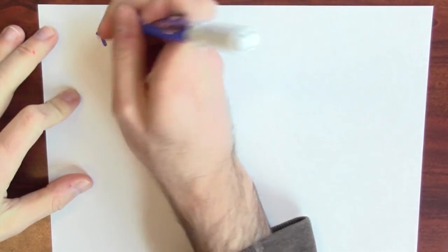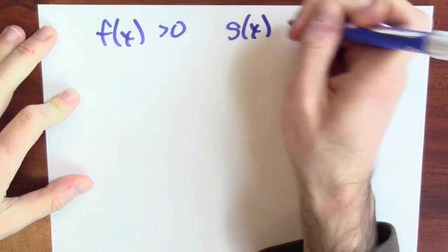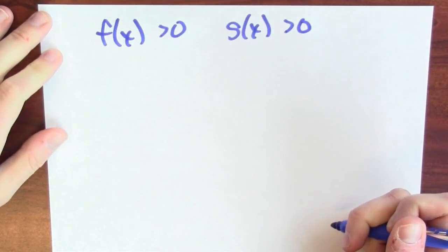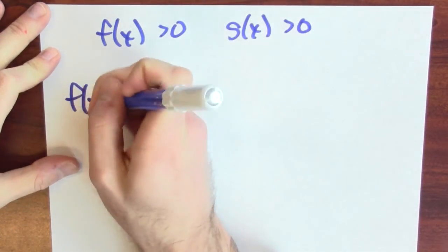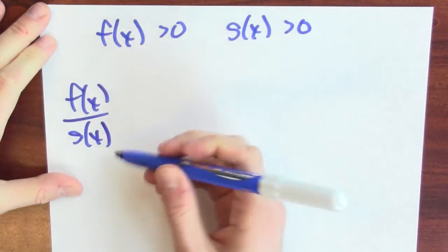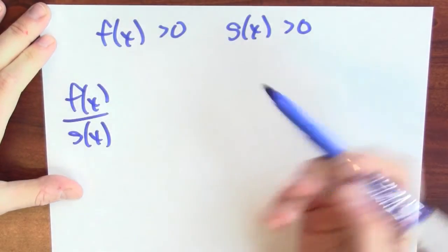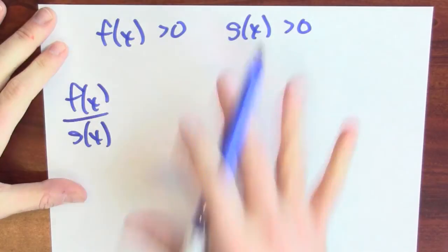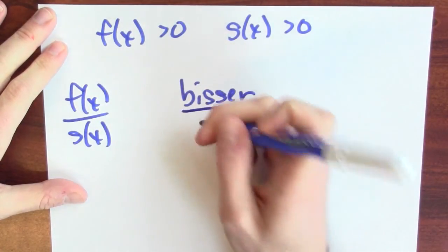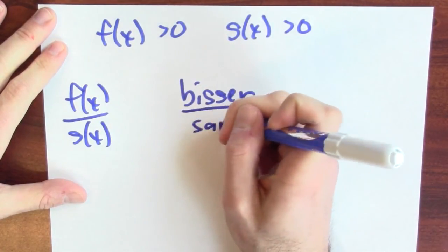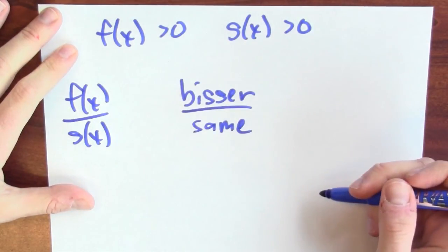To make it easy on ourselves, let's suppose that f(x) is positive and g(x) is positive. I'm trying to understand the derivative of the quotient — really, how is the quotient changing when f and g are doing some changing. Let's make that really concrete. Let's suppose that the numerator is getting bigger, but the denominator is staying the same. How does this change?